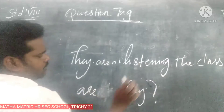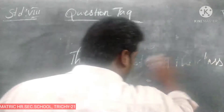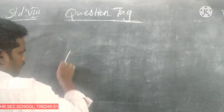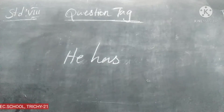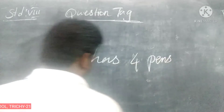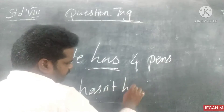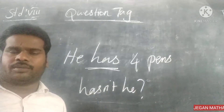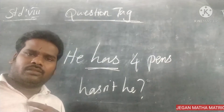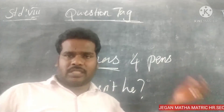With 'has': 'He has pens' — positive statement, so the tag is negative: 'hasn't he?' The question mark is very important. With 'have': 'I have four pens' — positive statement, so the tag is negative: 'haven't I?' So positive means negative and negative means positive.